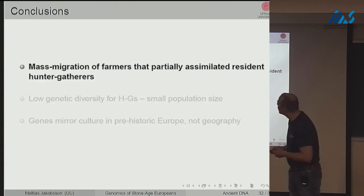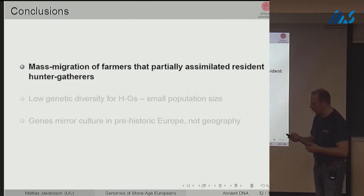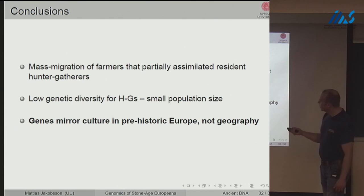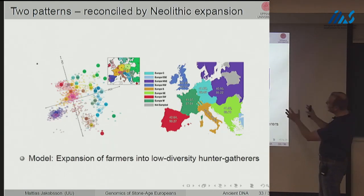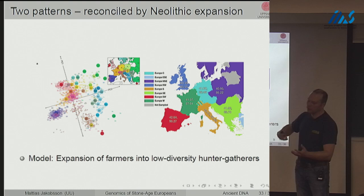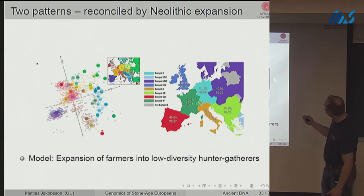To summarize: we see very dramatic events of mass migration of farmers that partially assimilated hunter-gatherers in Europe — one of the most dramatic migration events on the continent. Hunter-gatherers show lower genetic diversity, indicating smaller population sizes. Genes mirror culture rather than geography in prehistoric Europe, unlike modern times. A synthesis model would have hunter-gatherers living across Europe, then a more diverse group of farmers coming in and mixing to greater degrees in the south, with the hunter-gatherer gene pool being more diluted further south — explaining both the isolation-by-distance pattern and the north-south diversity gradient.